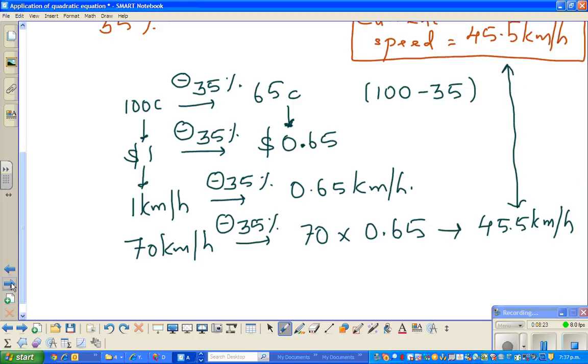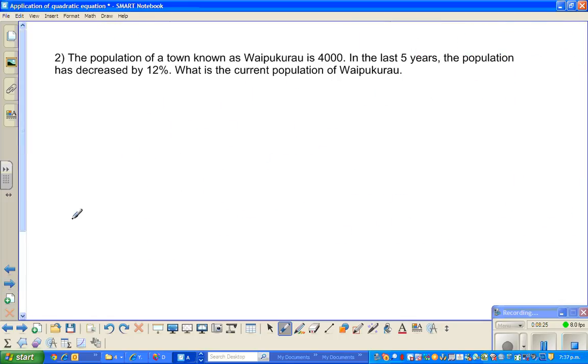Let me do one more example very fast. The population of a town known as Waipukurau is 4000. In the last five years, the population has decreased by 12%. What is the current population? The same logic. We will use the shortcut method now.